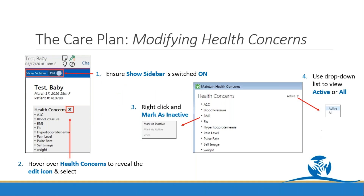You're also able to modify health concerns within the care plan module. Start by selecting show sidebar on, then hover over the health concerns to illuminate the changing icon, and select it to open the maintain health concerns box. Right click the health concern you'd like to modify and select set as inactive. If a health concern is already inactive, you'll have the ability to set it as active again. You can also adjust what you see using the drop-down menu — instead of just active, you can select all to see inactive or voided concerns as well.